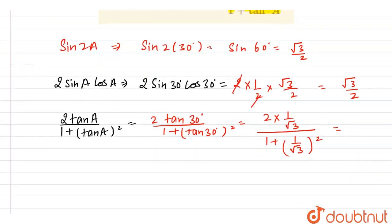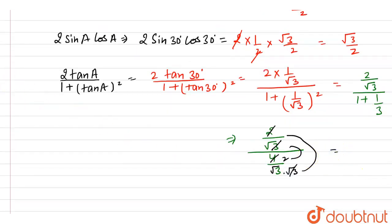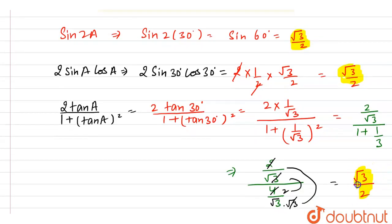Solving further, the numerator is 2/√3. The denominator is 1 plus 1/3, and taking LCM gives (3+1)/3 = 4/3. So we have (2/√3) ÷ (4/3). The 2 cancels with 4 to give 2, and writing √3 as √3×√3, the √3 cancels, leaving us with √3/2.